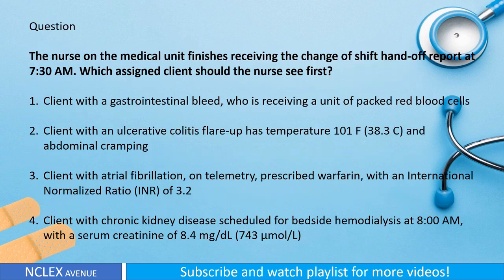Question: The nurse on the medical unit finishes receiving the change-of-shift handoff report at 7:30 AM. Which assigned client should the nurse see first? One: client with a gastrointestinal bleed receiving a unit of packed red blood cells. Two: client with an ulcerative colitis flare-up with temperature 101°F (38.3°C) and abdominal cramping. Three: client with atrial fibrillation on telemetry prescribed warfarin with an INR of 3.2. Four: client with chronic kidney disease scheduled for bedside hemodialysis at 8 AM with a serum creatinine of 8.4 mg/dL (743 µmol/L).